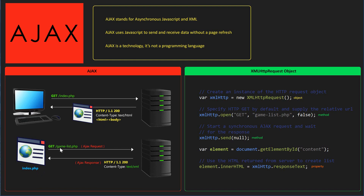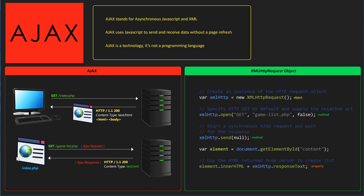Next we're gonna go ahead and get game-list.php using an Ajax request. We're gonna request that page from the server using Ajax, and the server is going to respond with an Ajax response with a content type of text or XML. Then we're gonna update our index.php page with that Ajax response content, and all of that is going to happen while we're still on the index.php page — we're not going anywhere.